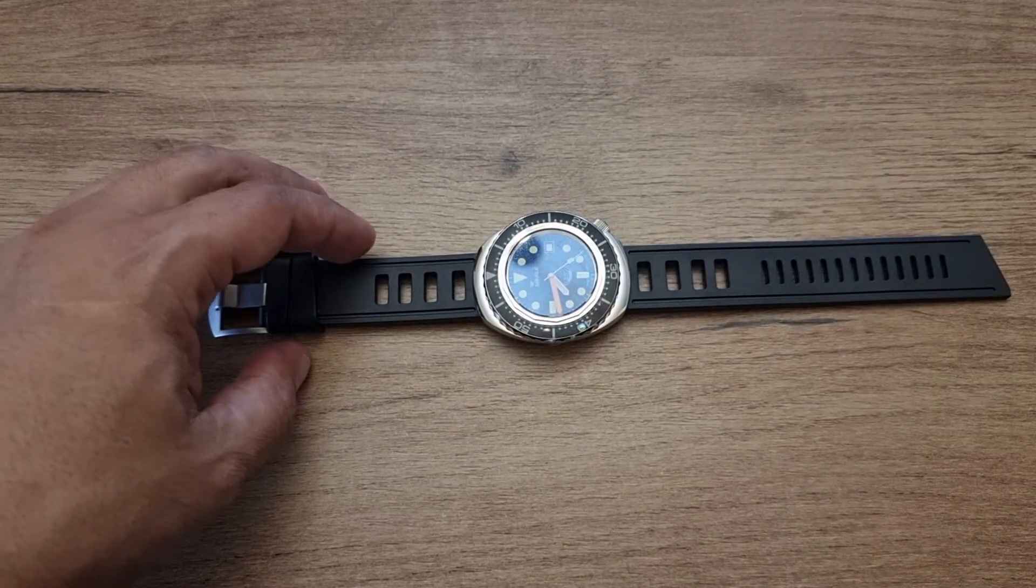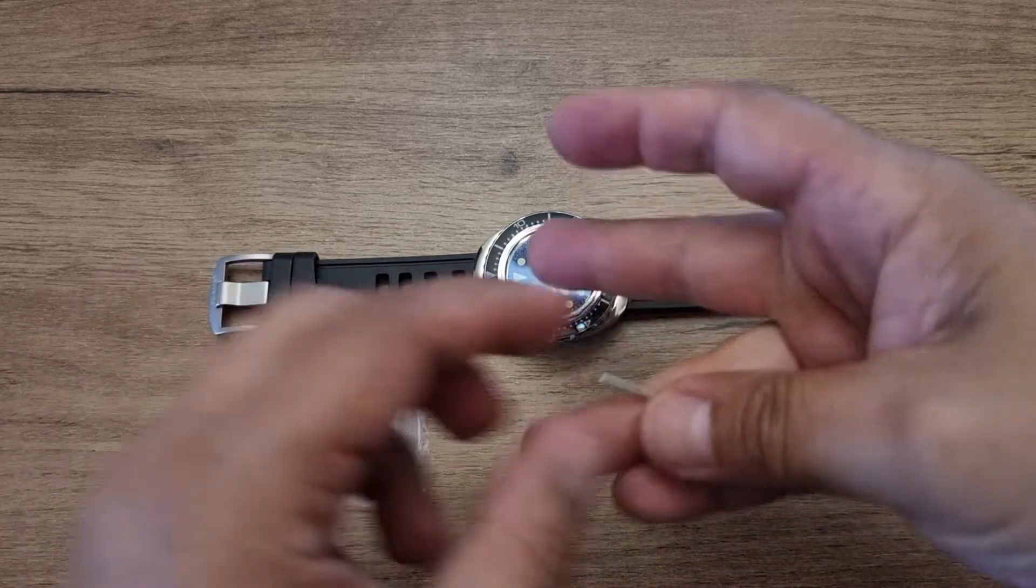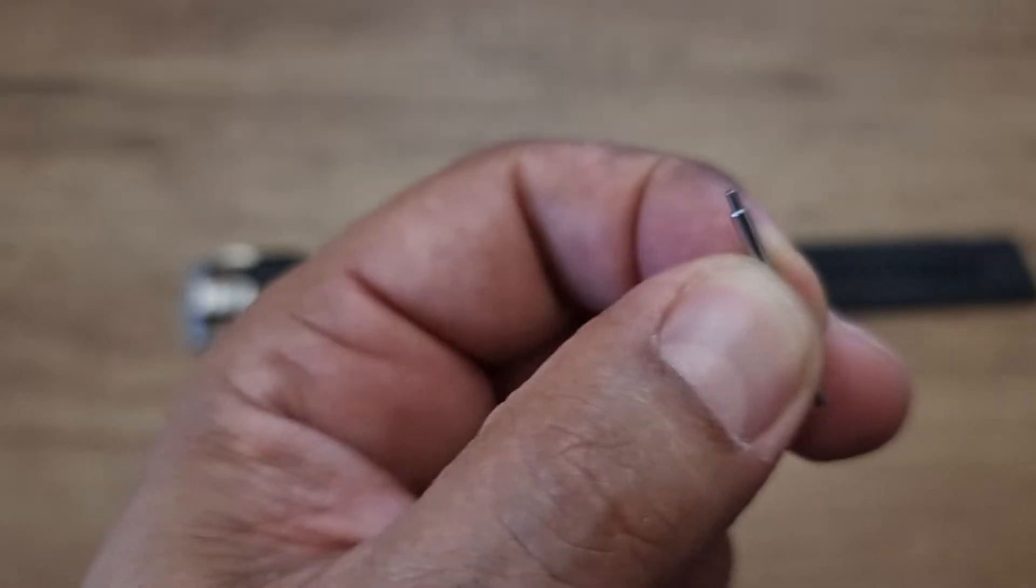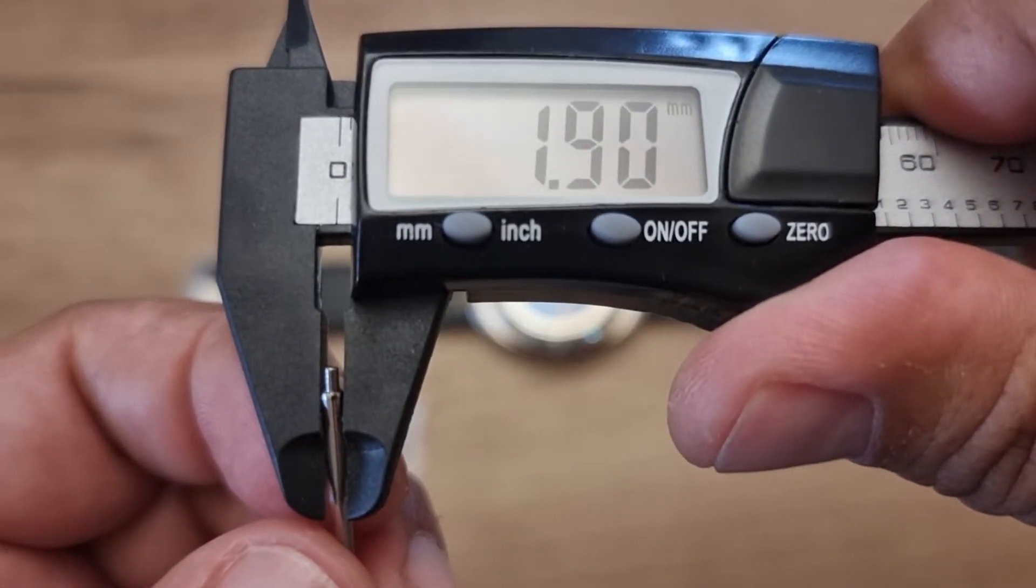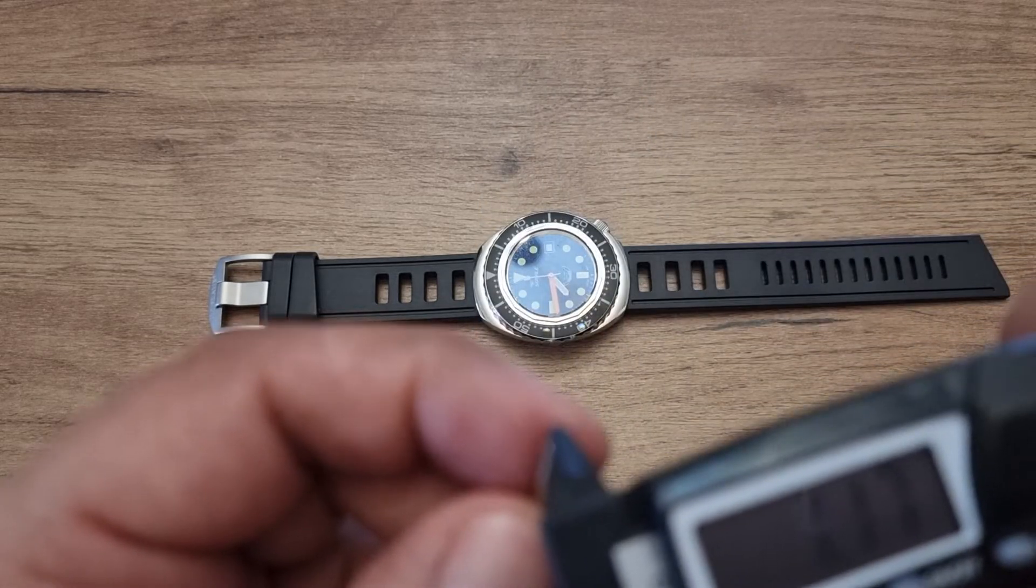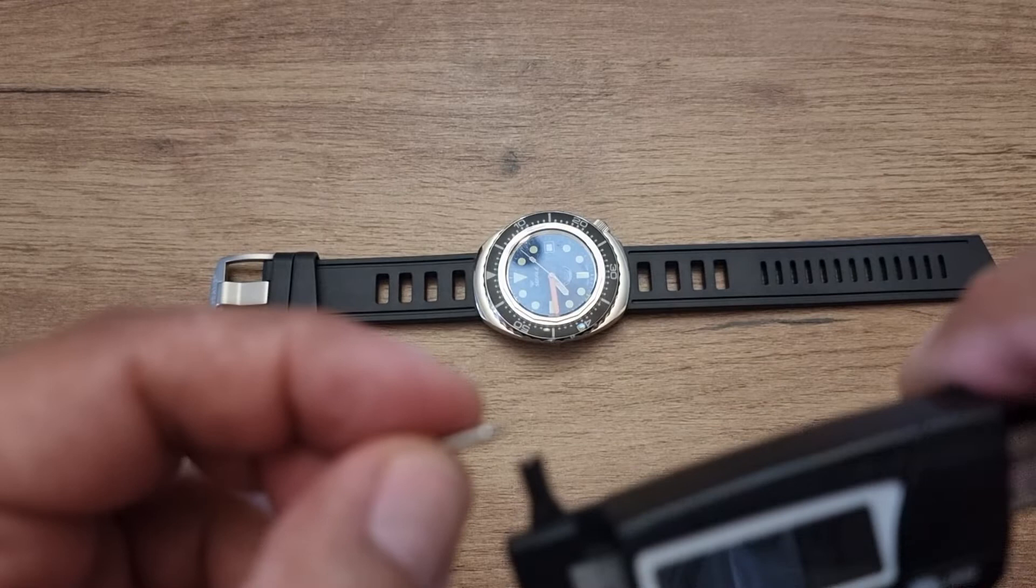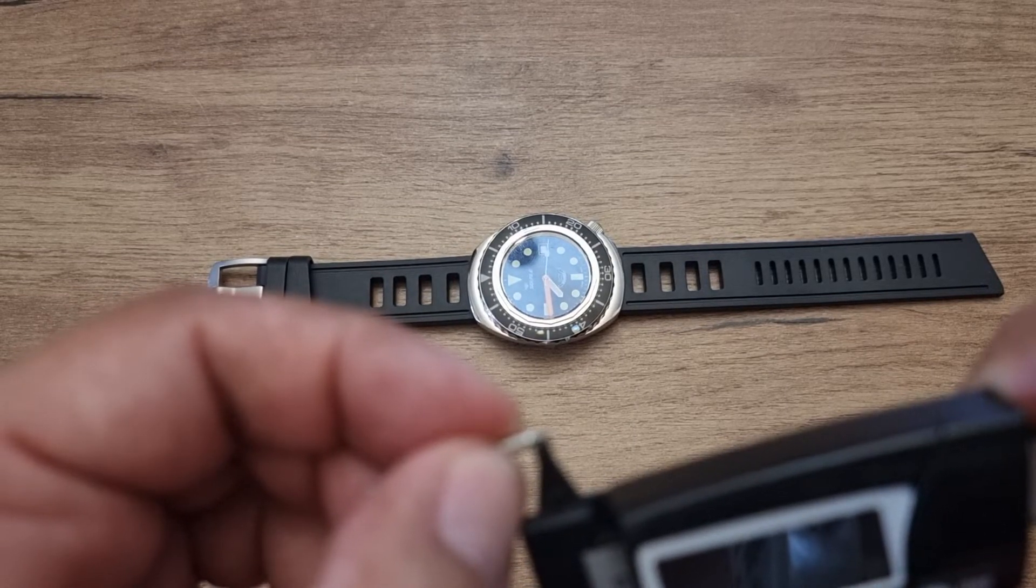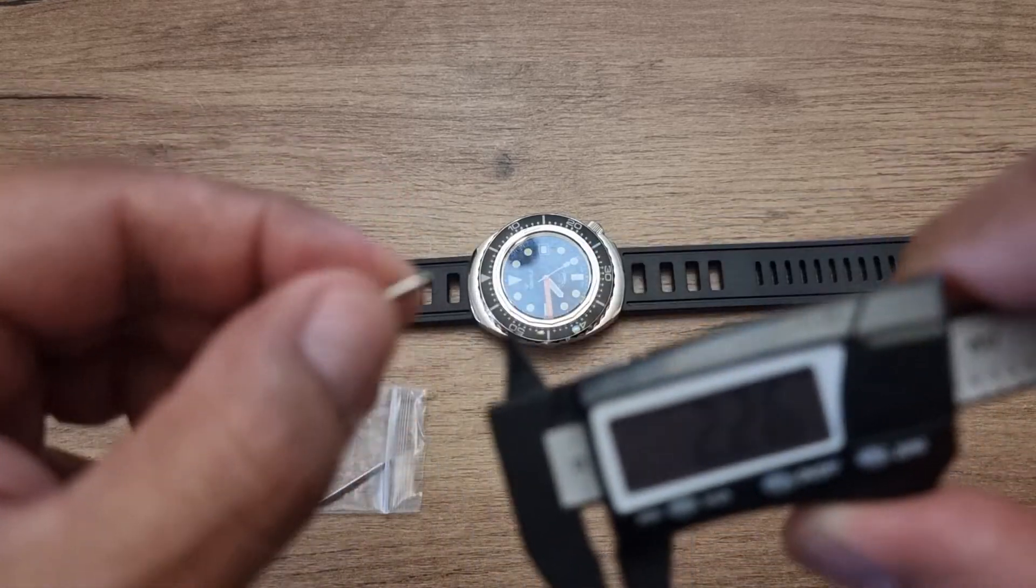However, what you can use is this kind of spring bar which has a diameter of 1.90, the thickness of the metal that goes in your lug hole is 1.1, and the length is I think 2.5, but it's very tough to measure it here.